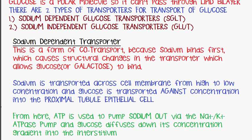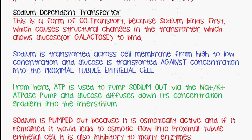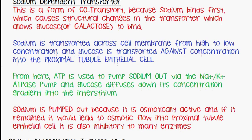From here, ATP is used to pump sodium out via a sodium-potassium ATPase pump. While this is happening, glucose diffuses down its concentration gradient into the interstitium with a channel protein. The reason we pump sodium back out is because sodium itself is osmotically active due to its positive charge.